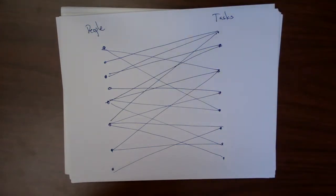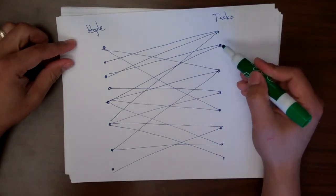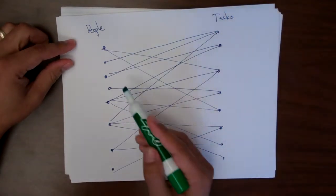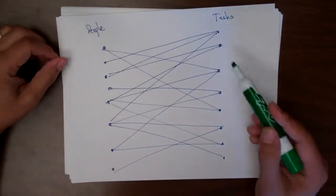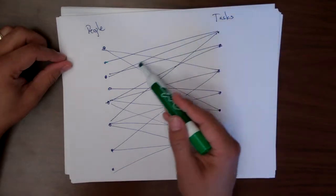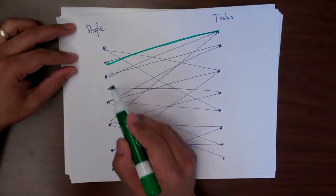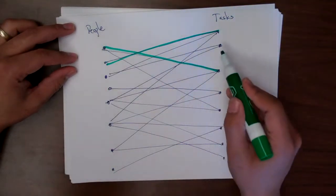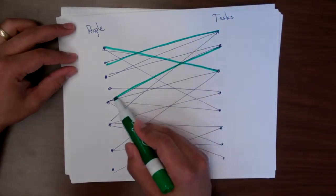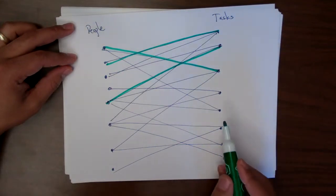In most applications of matching, the underlying graphs under consideration are going to be bipartite. This makes sense in terms of, say, a scheduling problem or an assignment problem, where you have a group of people and a group of tasks. The edges represent compatibility. The question is: is it possible to choose for each task one of the people such that all the tasks get done and no person is assigned more than one task?